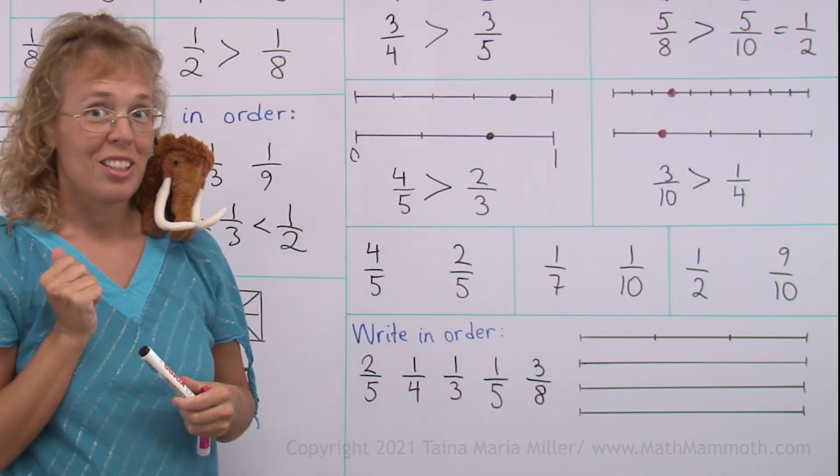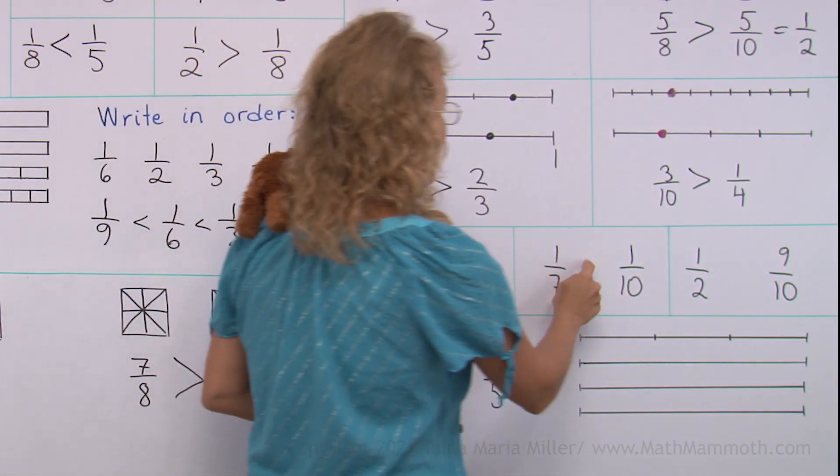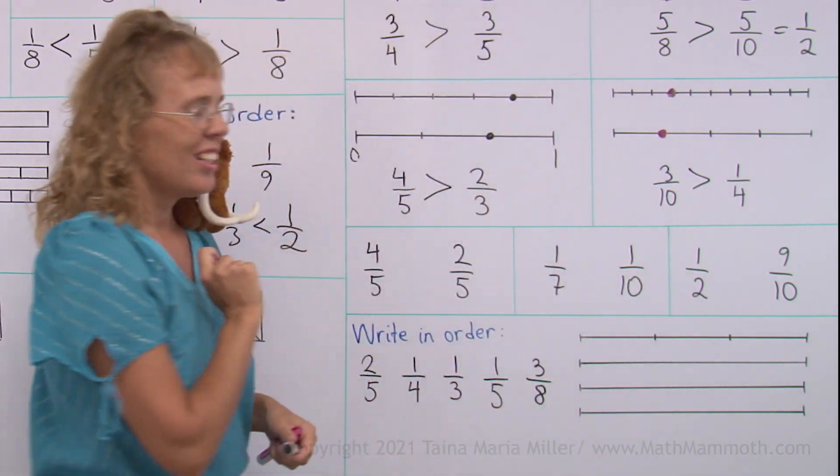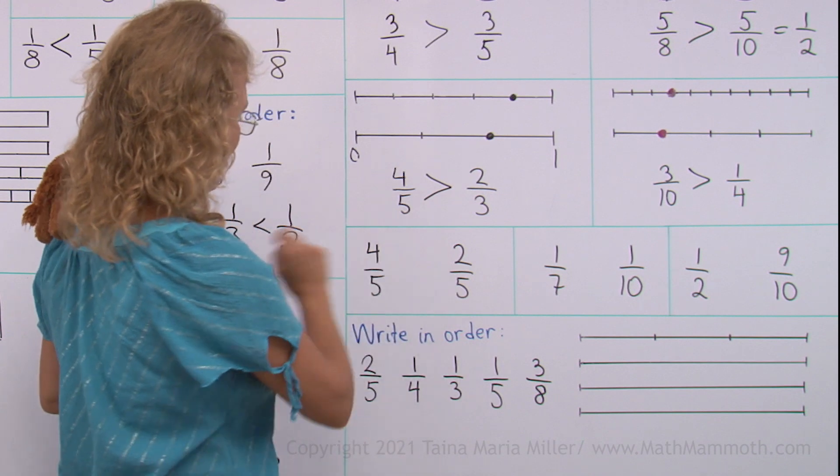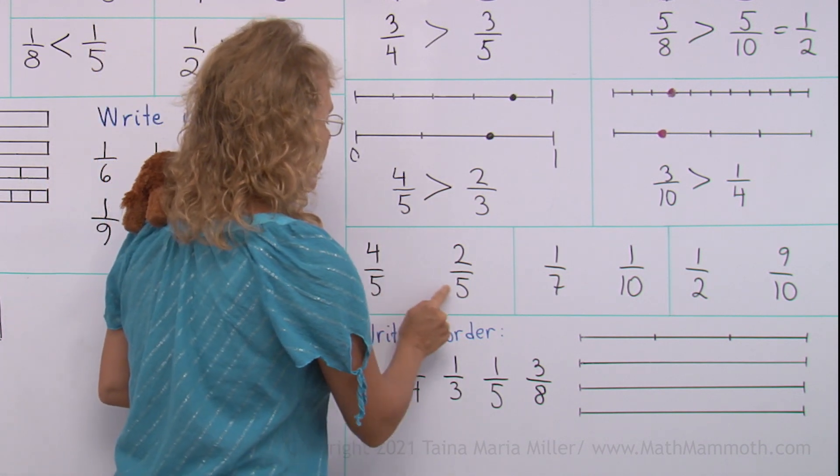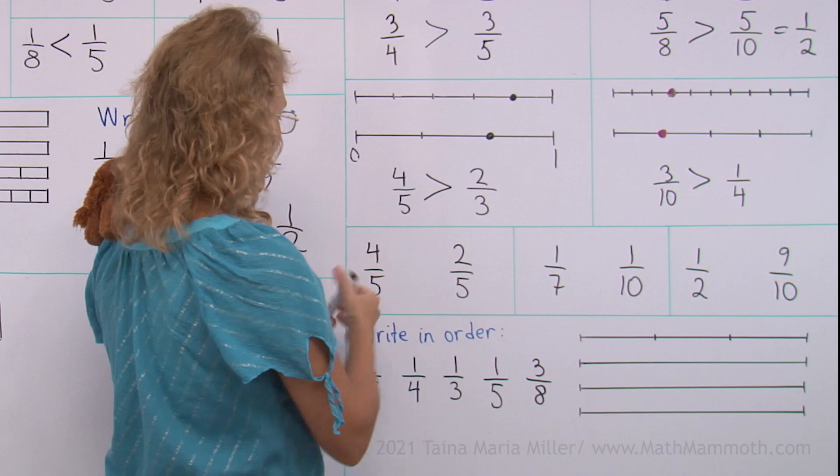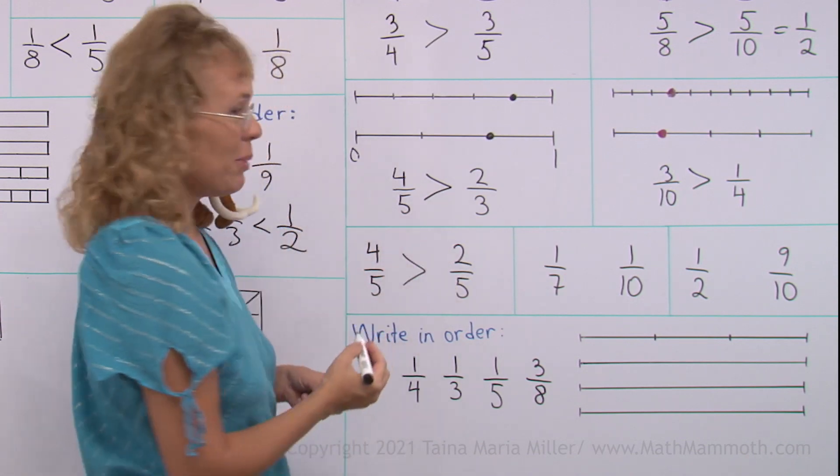Let's put our skills to a little test. Can you compare these three pairs of fractions? There are no pictures this time. Four-fifths and two-fifths. Okay, here we have same kinds of parts, fifths and fifths, so four pieces is more than two pieces.